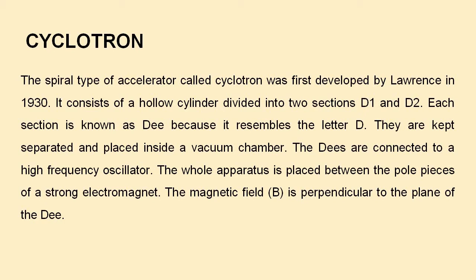It consists of a hollow cylinder divided into two sections. Each section is known as a D because it resembles the English letter D. They are kept separated and placed inside a vacuum chamber. The Ds are connected to a high frequency oscillator. The whole apparatus is placed between the pole pieces of a strong electromagnet. The magnetic field B is perpendicular to the plane of the D.